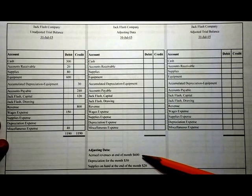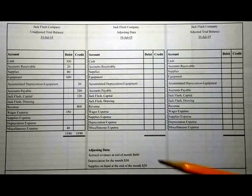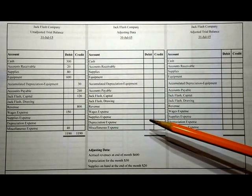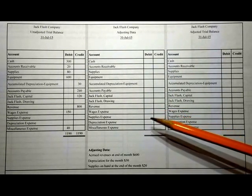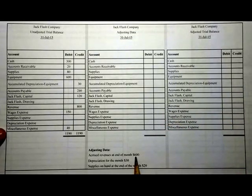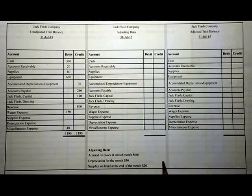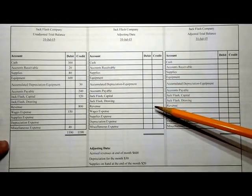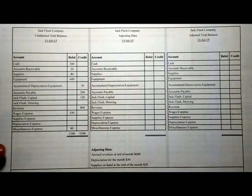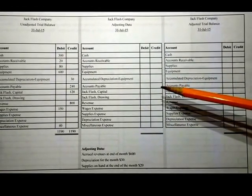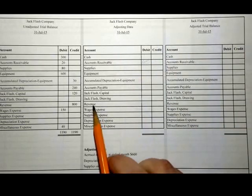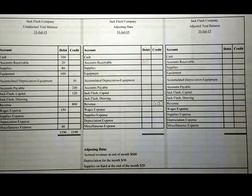Accrued revenues at the end of the month: $600. Accrued revenues is simply a fancy way of indicating that we need to bill our customers — we've done work for them and now we need to invoice them, let them know that they owe us money. So we're going to record the billing of the customers by debiting accounts receivable and crediting the revenue account. Accounts receivable is going to be debited for $600, and revenue credited for $600.